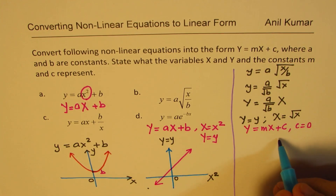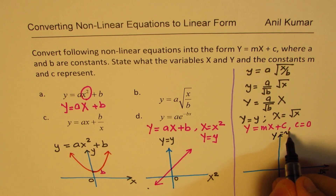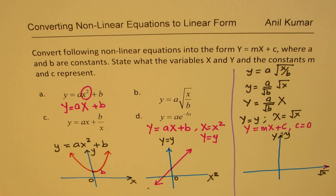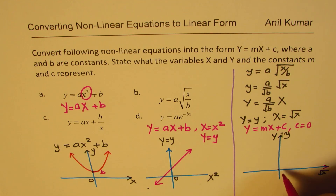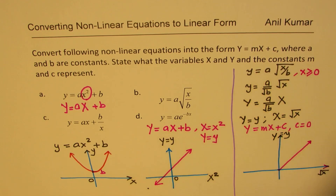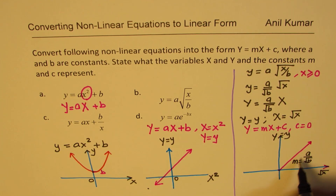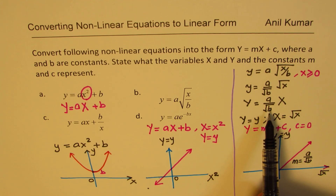If we plot square root of x on the x-axis and capital Y, which equals lowercase y, on the y-axis, we get a straight line going through the origin. Since x is under a square root, we have the restriction that x must be greater than or equal to 0. The slope m of this line is a over square root b.